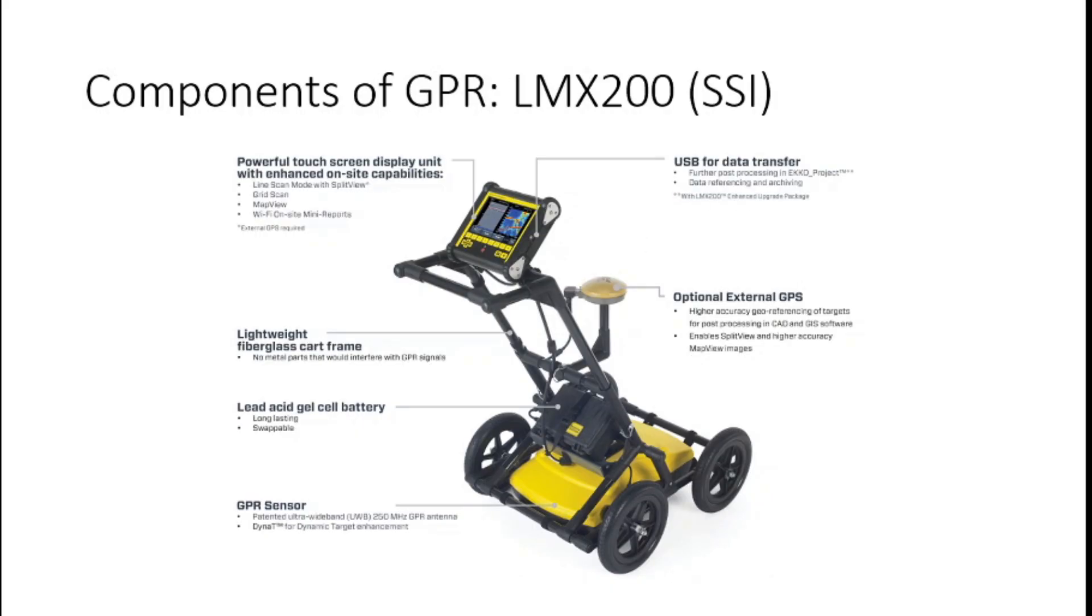Here is an example from Sensors and Software LMX 200. As you can see on the top of this instrument we have a control unit and it is capable of doing line scan mode with split view which is a kind of module in it, grid scan and map view. There is functionality using wifi for on-site mini reports you can generate. You can use external GPS as you can see here, and the GPR sensor is on the bottom with the wheel which is capable to record the distance of each and every trace accordingly.